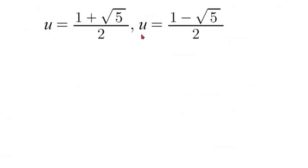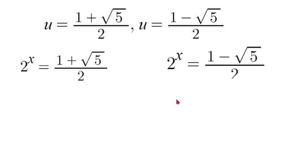So what we're going to do is we know our u value is 2 to the power of x. So this is when we are going to substitute that back in. So you would have 2 to the power of x is equal to 1 plus square root of 5 over 2 and 2 to the power of x is equal to 1 minus square root 5 over 2.